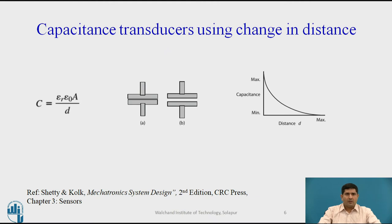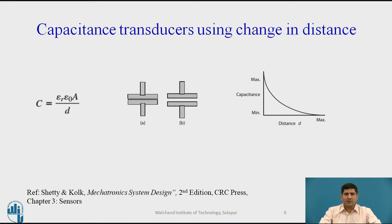The first case is you could alter the capacitance by separating the two electrodes, or by altering D. If you look at the formula and change D, since D is in the denominator, the relation ends up being non-linear.